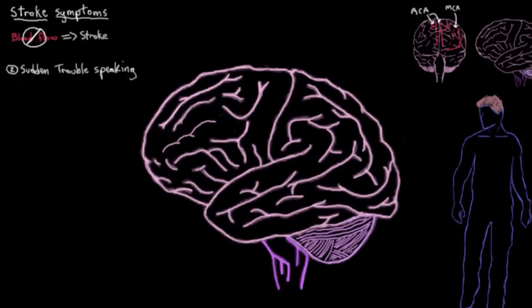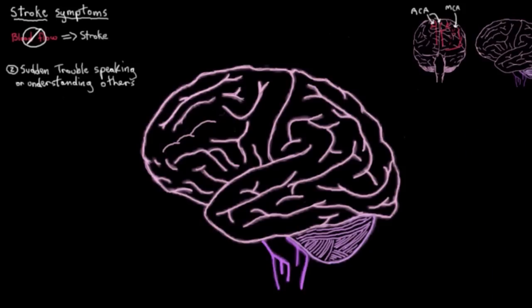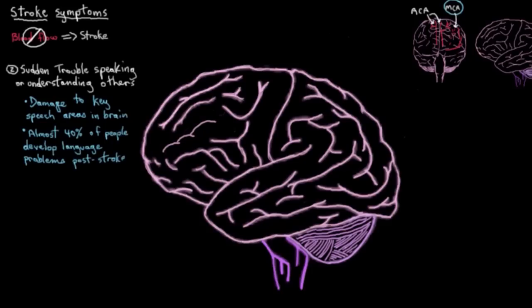Sudden trouble speaking or understanding others. And why would this happen? Well the most common reason you might have trouble with your speech is that the stroke has affected some of the key parts of your brain that deal with your speech, which are served by the middle cerebral artery. And actually almost 40% of people who have a stroke end up with some problems with expression of their language. So let me give you an example here of two important areas.